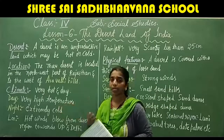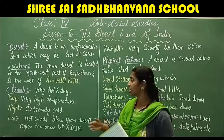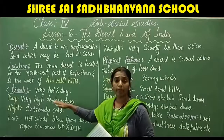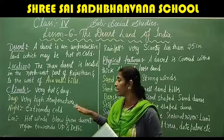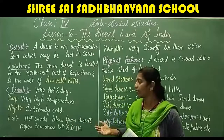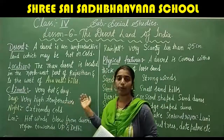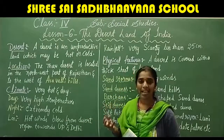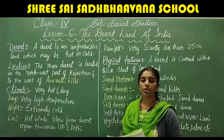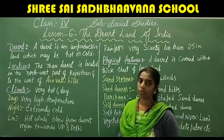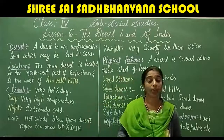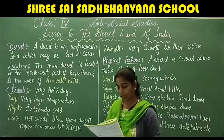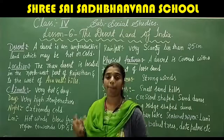Now let us study about the climate of the Thar Desert. The climate is very hot and dry. In daytime the temperature is very high, and at night it is extremely cold. This happens because sand absorbs and loses heat very quickly, which makes summers very hot and winters bitterly cold.